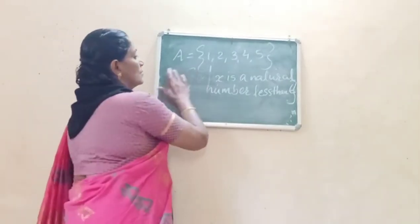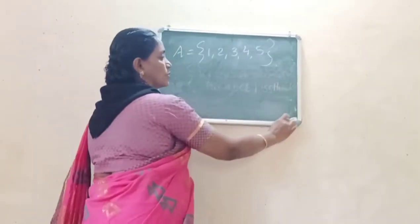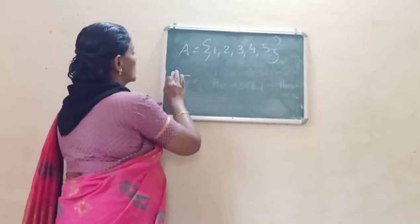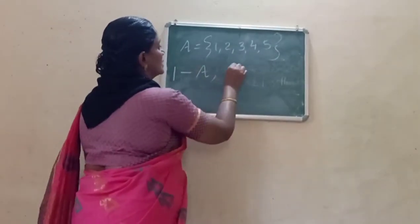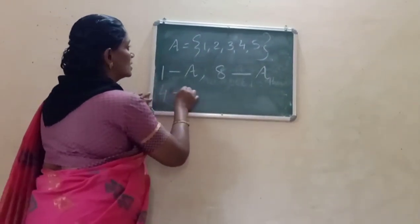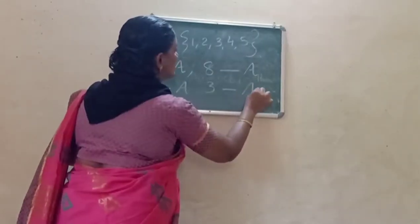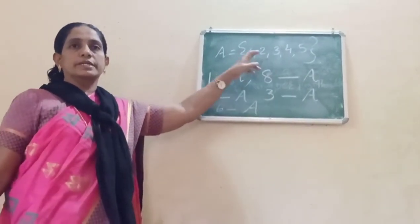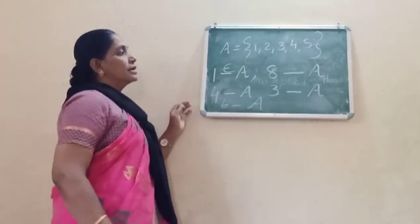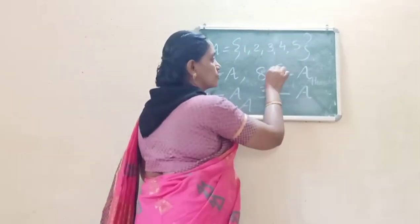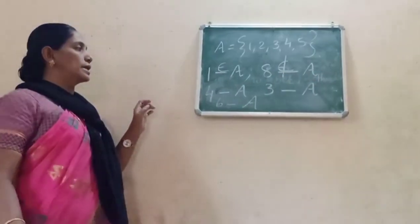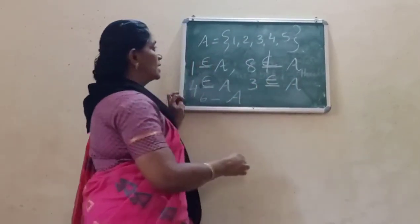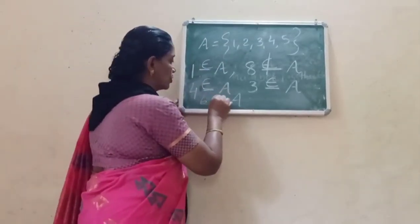Now, how to use the belongs-to symbol. Consider A = {1, 2, 3, 4, 5}. Fill in the blanks: 1 belongs to A. 8 — 8 is not an element of A, so 8 does not belong to A. 4 is an element of A, so 4 belongs to A. 3 also belongs to A. 6 is not an element of A, so 6 does not belong to A.